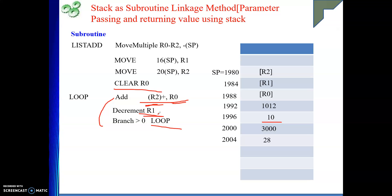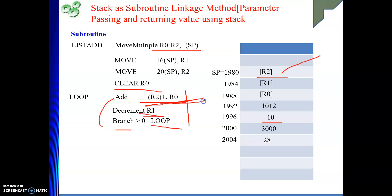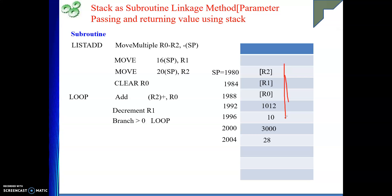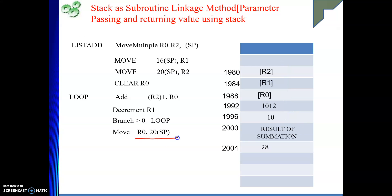Once the loop finishes, we do not return yet. We need to give the result back to the caller. The result is in R0. We store it at SP + 20, which is address 2000 — below the return address. This location will survive the return. So: MOVE R0, 20(SP) — the summation result is stored at address 2000 for the caller to retrieve.